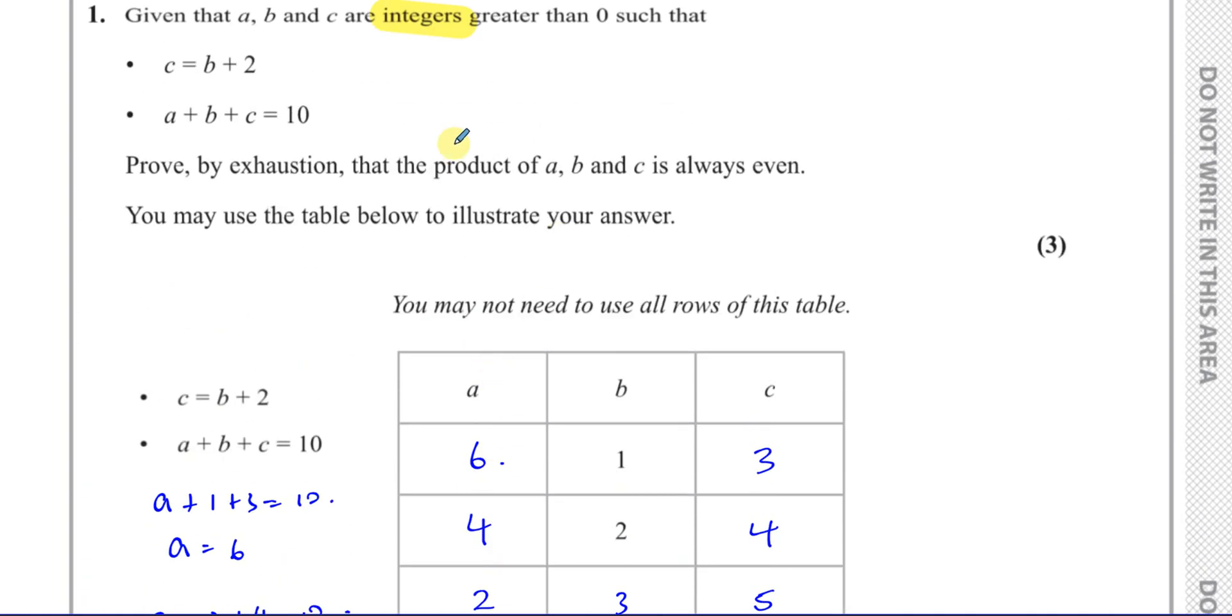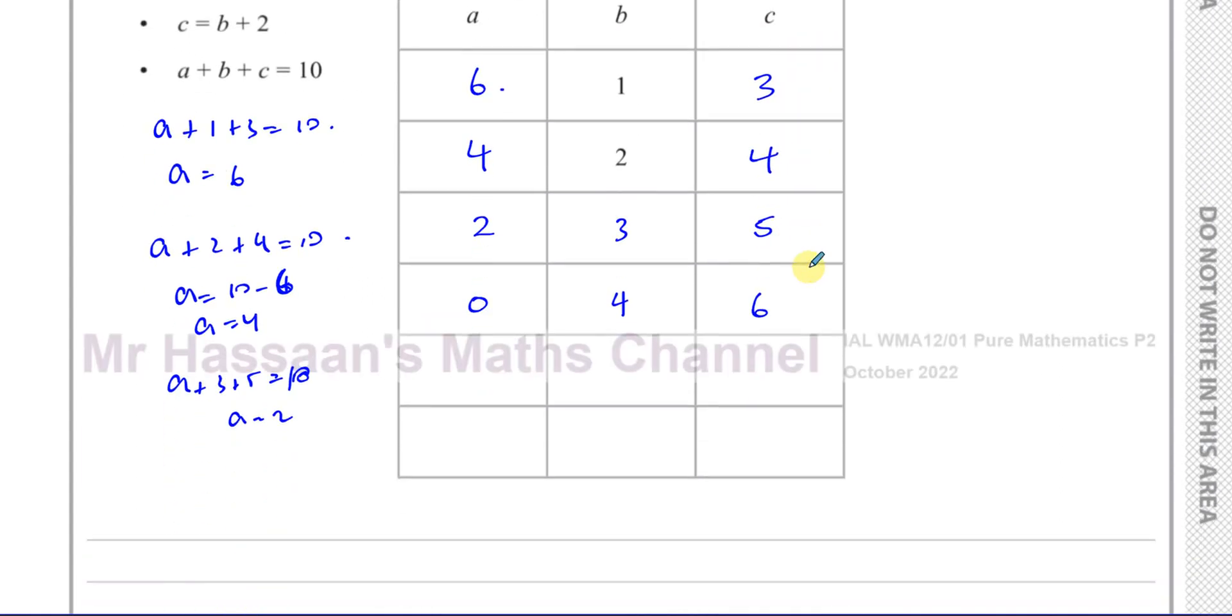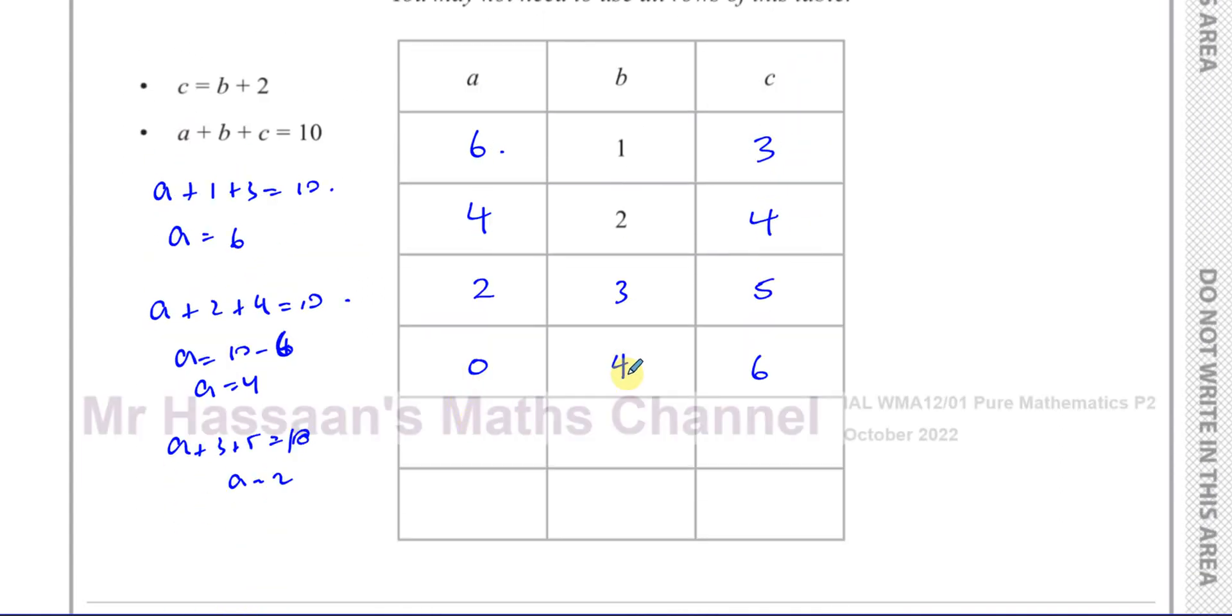Now, A can't be zero because it says here that the integer is greater than zero. So I can't go more than four with B. I can't go less than zero with B. I can't go more than three with B, in fact. I can't reach four because then one of those integers becomes zero. So I'm going to cross this out. If you write this down, you must cross it out to show that you're not including this.